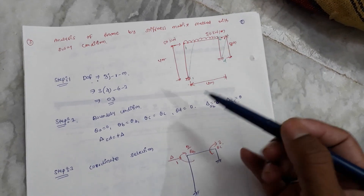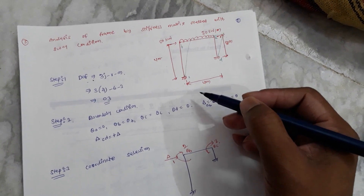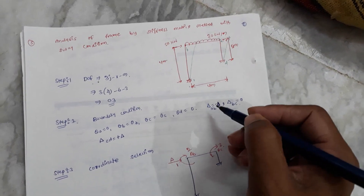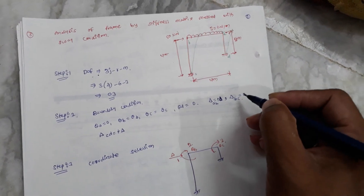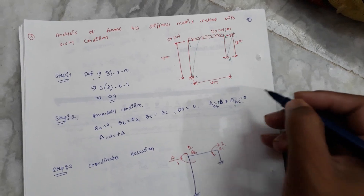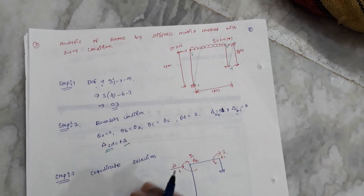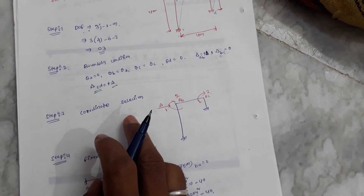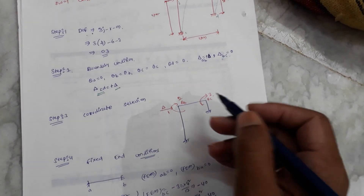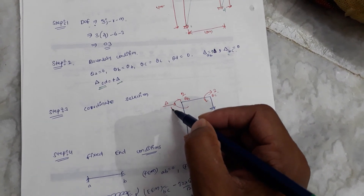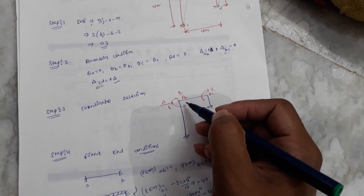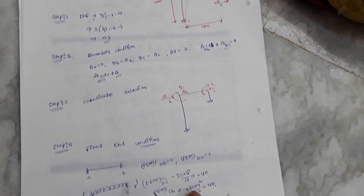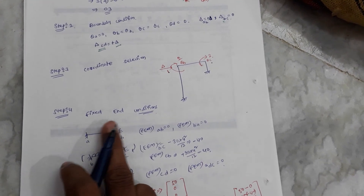For the sway: delta A-to-B is called delta — that is the sway displacement. Our left end is fixed and displacement is rightward, so we take it as positive delta. Delta B-to-C is zero, and delta C-to-D is also delta. In step 3, coordinate selection, we select three unknowns: delta (sway), rotation at B, and rotation at C.